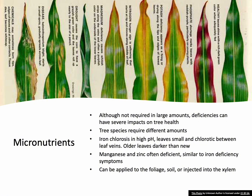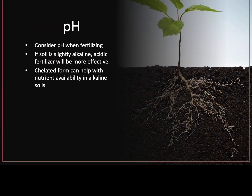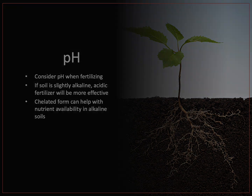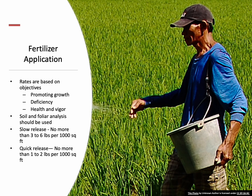Micronutrients can be applied to the foliage, soil, or injected directly into the xylem. Fertilizer should be chosen with soil pH in mind — if the soil is slightly alkaline, an acidic fertilizer will be more effective. A chelated form can help with nutrient availability in alkaline soils. Fertilizer rates should be based on tree health objectives and soil and foliar analysis, considering species, weather, and other factors. Slow release application should be no more than 3 to 6 pounds per thousand square feet.